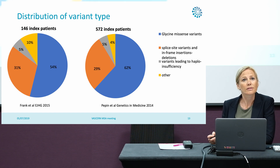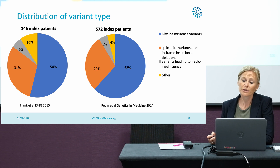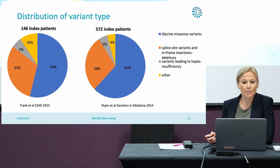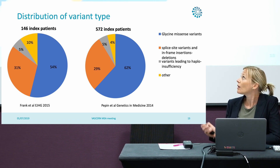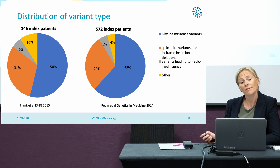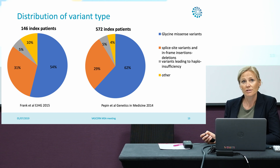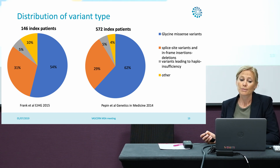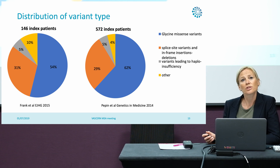If we look at the distribution of the different types of variants, there are two large studies that looked at these patients: one study with 146 index patients and one study with 572 index patients. We see that in a majority of patients there is a glycine substitution, in about 50 to 60% of patients.